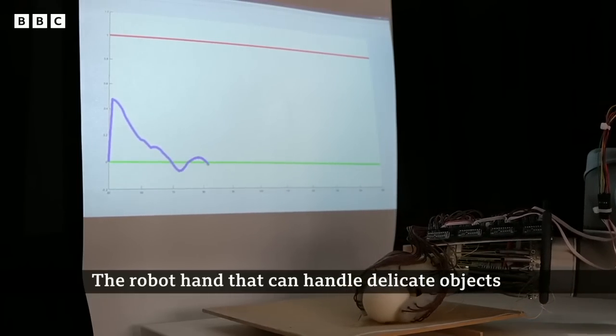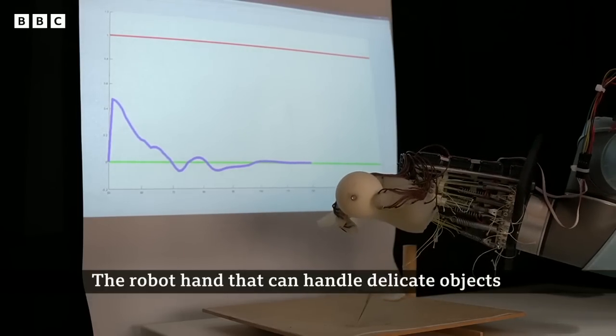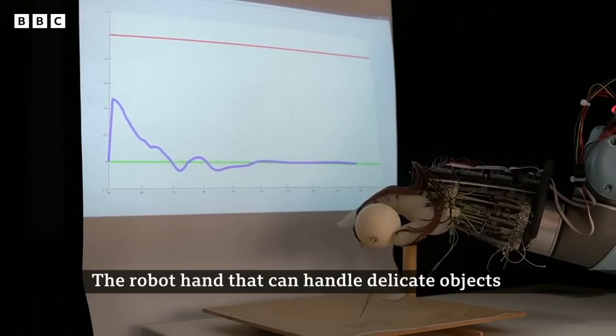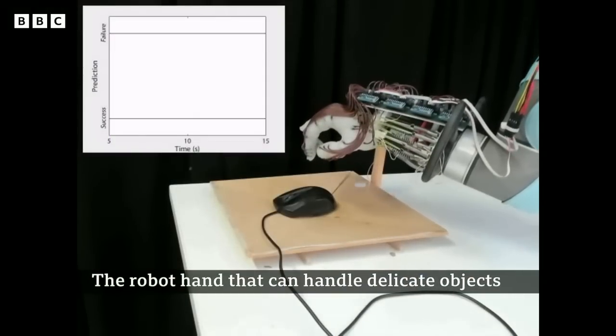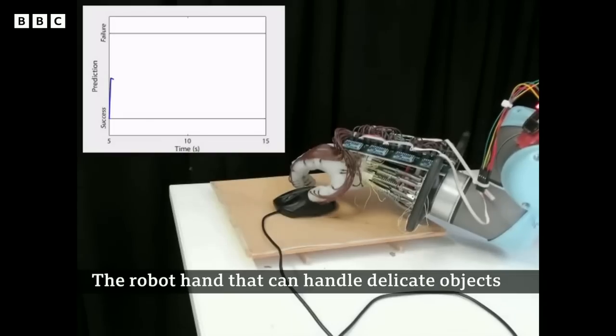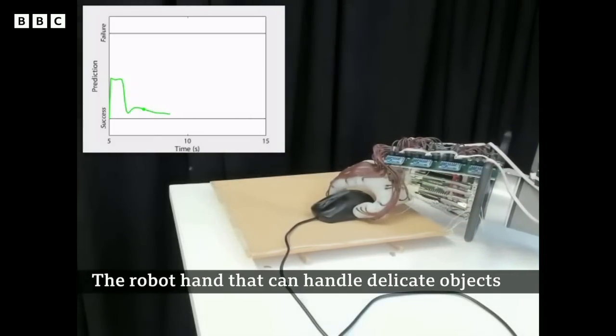That seems to be the critical bit. We're looking at the pictures of this robotic arm as we're speaking. Now, humans instinctively know how much pressure to apply so that the egg that I mentioned doesn't break or get dropped. Tell me how these sensors actually work, how they mimic human behavior.